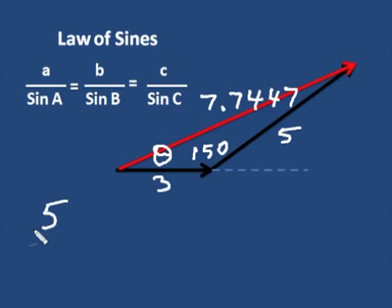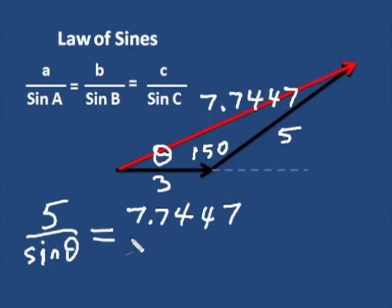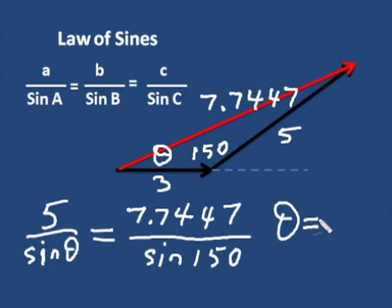So I know that a over sine A, and this would be 5 over sine theta. There's my unknown. Now I need something that has both the side and the angle, and I'll use 7.7447 divided by sine of 150. Now you put that through your calculator, and you will get good at this after a while. What you should find is that theta will equal 19 degrees.